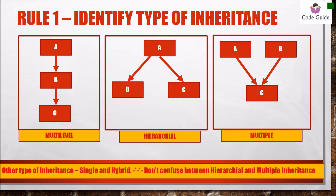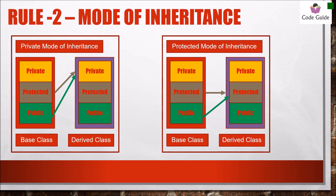In case of multiple inheritance, we have two or more base classes but only one single derived class. Children, don't confuse between these two types of inheritance — most of the time students commit this mistake. Other types are single inheritance, where there is one base class and one derived class, and hybrid, which is a mixture of any two inheritance types.